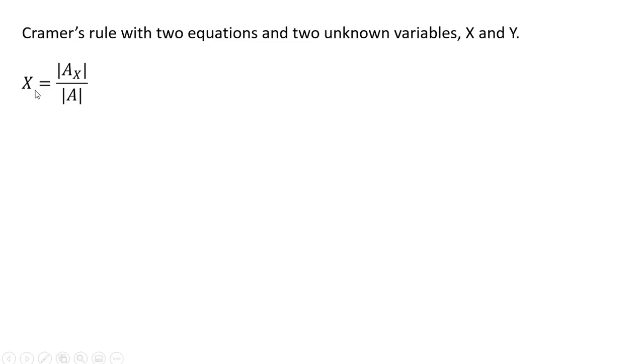So to solve for the unknown variable x, we're going to do the following equation. And to solve for the unknown variable y, we're going to do a similar type equation, where |A| is the determinant of the coefficient matrix.